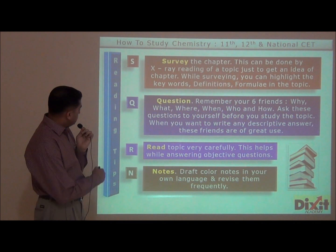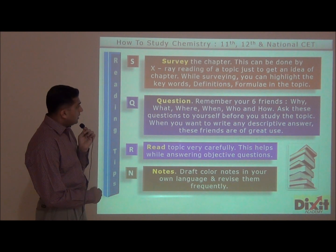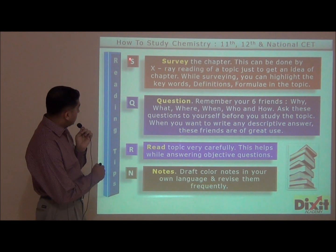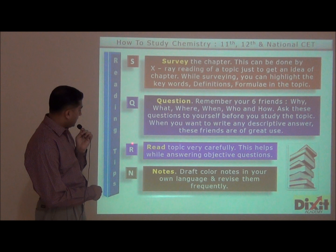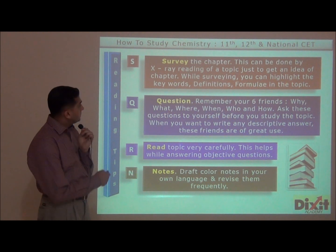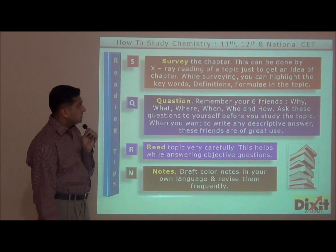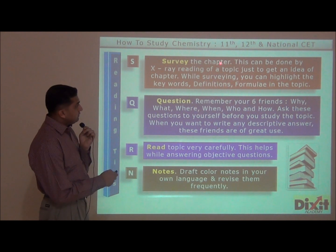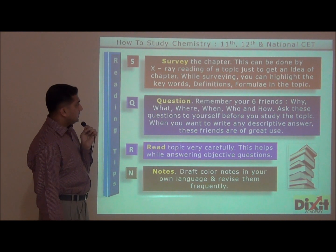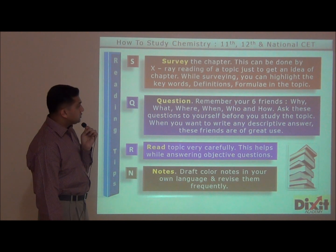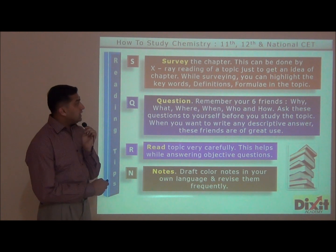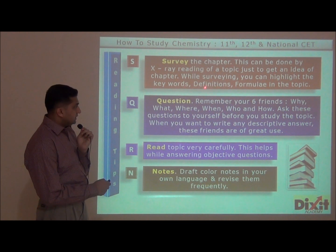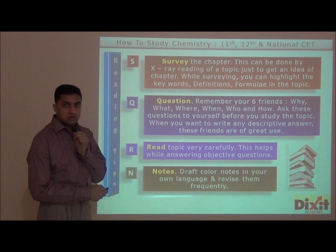Let us discuss reading tips. Understand four concepts: S, Q, R, and N. S stands for Survey. Reading a textbook is mandatory. Survey the chapter — this can be done by x-ray reading of the topic just to get an idea of the chapter. While surveying, you can highlight keywords, definitions, and formulae in the topic.